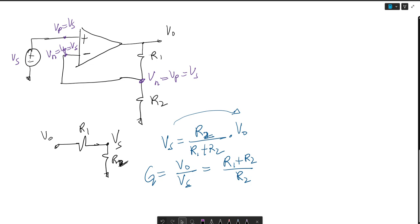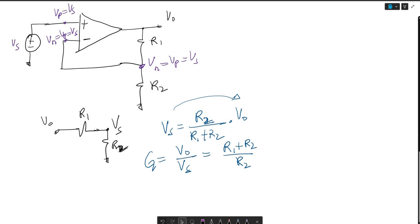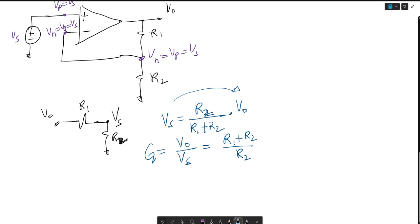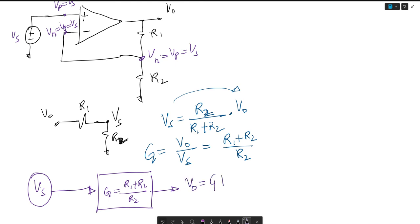So the gain G equals Vout over VS, which in this case, if I divide VS over, I would get R1 plus R2 over R2. So this is the gain of this circuit. Now we can say that we can draw a block diagram and say that if you give me a VS, a voltage input source, I'm going to pass it through my amplifier G equals R1 plus R2 over R2, and this is going to amplify it, so Vout is going to be G times VS.